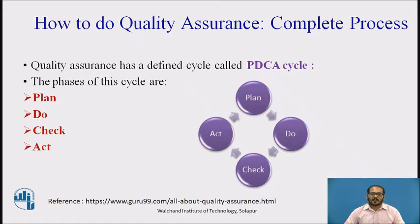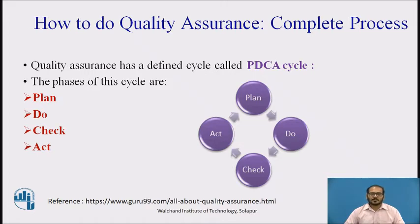Plan: the organization should plan and establish the process-related objectives and determine the processes required to deliver a high-quality end product. Do: development and testing of the processes and making changes to the processes. Check: monitoring of the processes, modifying them and checking whether they meet the predetermined objectives. Act: implement actions necessary to achieve improvements in the processes. An organization must use quality assurance to ensure the product is designed and implemented with the correct procedure, helping to reduce problems and errors in the final product.